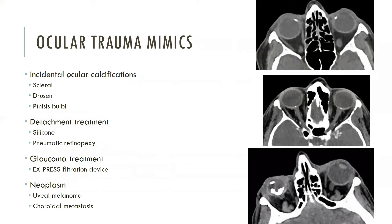Various findings encountered during the interpretation of orbital imaging may mimic acute traumatic ocular injury. Incidental ocular calcifications such as senescent scleral calcifications occurring at the medial and lateral rectus muscle insertions, and drusen occurring at the optic nerve head, should not be mistaken for intraocular foreign bodies. Phthisis bulbi refers to an atrophic, scarred, and non-functioning globe resulting from a remote insult including trauma, infection, inflammation, or radiation. On CT, the deformed globe will appear diminutive and often contains dystrophic calcifications.